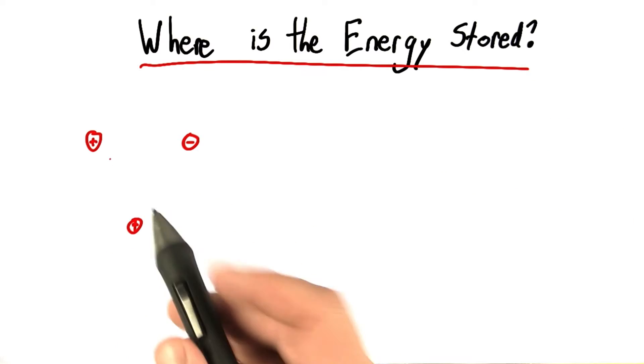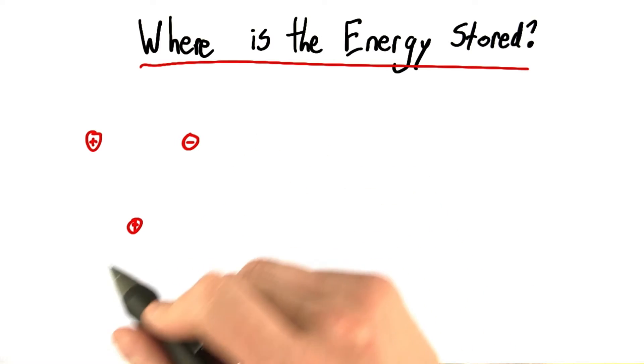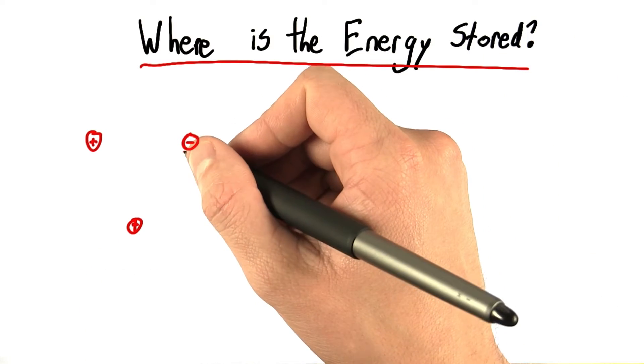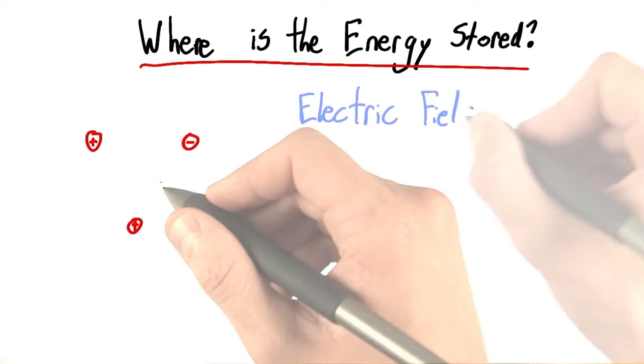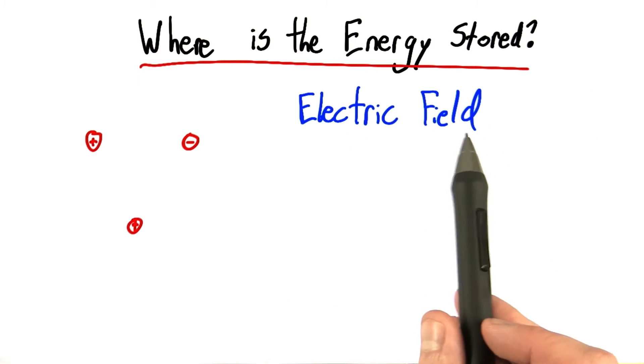So where is the energy stored? In the previous example, we had three charges, 2 plus and 1 minus. And we want to know, is the energy stored in the charges, somehow in the space between? And the answer is that the energy is stored in something called the electric field.